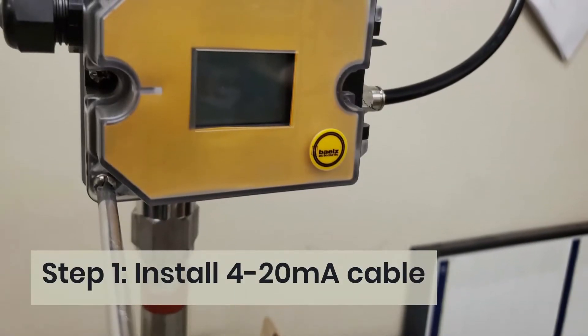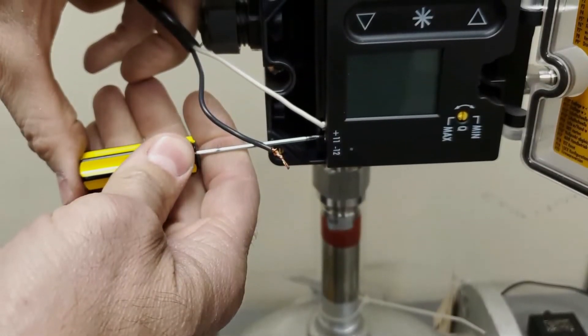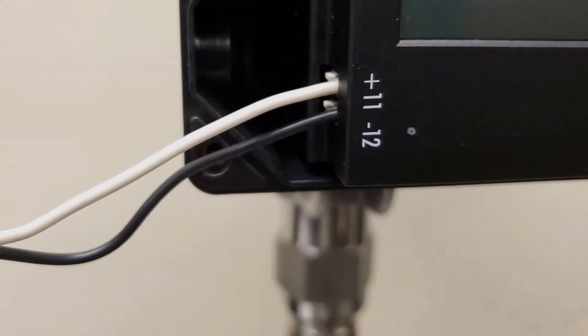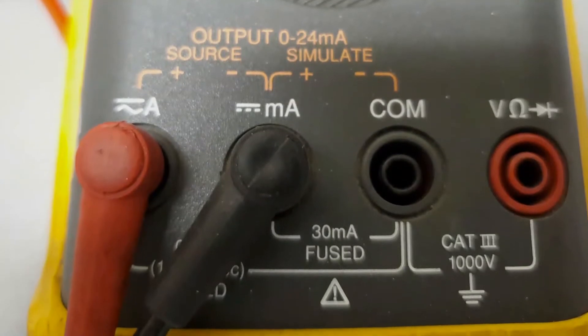Step 1: Install 4-20mA cable. Unscrew the cover. The white wire goes on terminal plus 11, the black wire goes on terminal minus 12. Connect the 4-20mA cable to the meter leads. Insert meter leads to source on the Fluke process meter. Turn the dial on the meter to mA output.